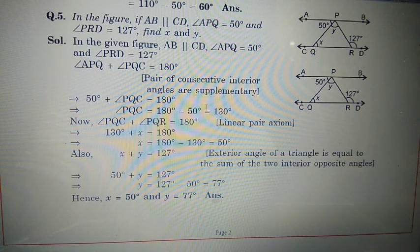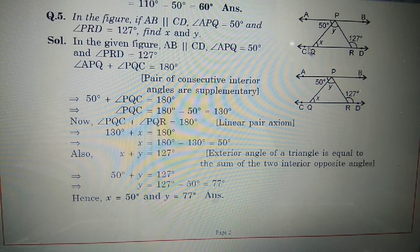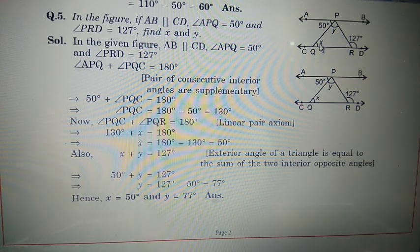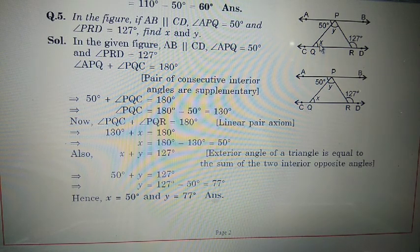Again, angle PQC and angle PQR form a linear pair. Angle PQC is 130, so angle PQR — that is X — equals 50 degrees. X is 50 degrees.